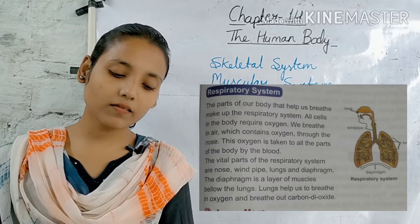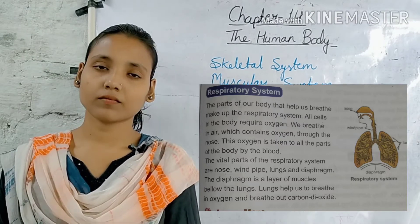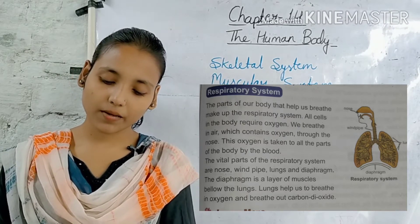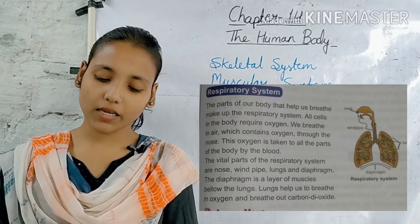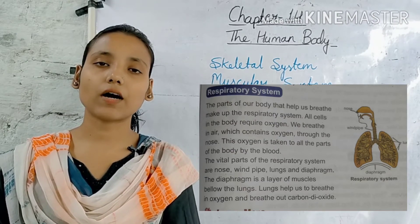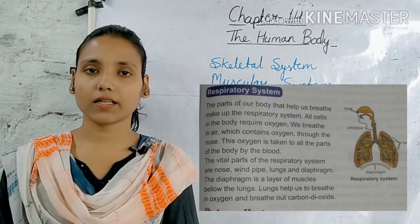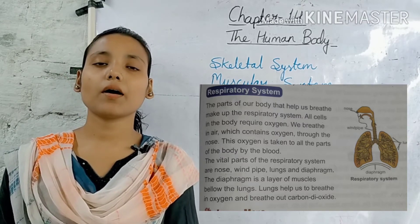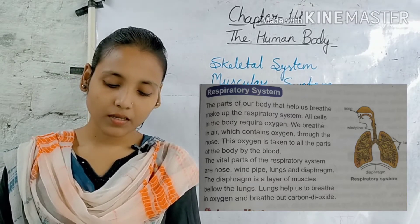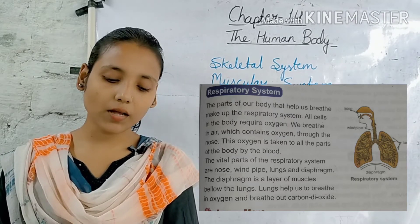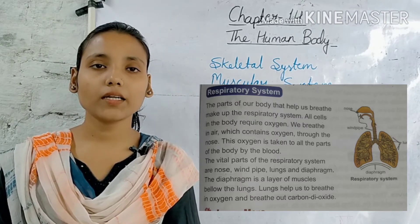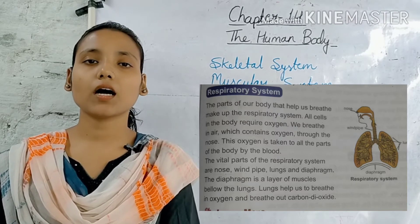All cells in the body require oxygen. हमारे शरीर के सभी कोशिकाओं को oxygen की आवश्यकता होती है। We breathe in air which contains oxygen through the nose. Bachcho, हम air में सांस लेते हैं, जिसमें oxygen होती है। यह oxygen हमारे शरीर में nose यानि की नाक के द्वारा जाती है। This oxygen is taken to all parts of the body by the blood.